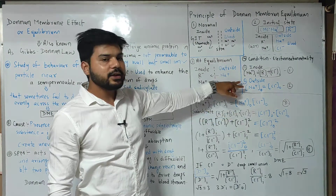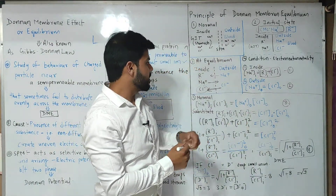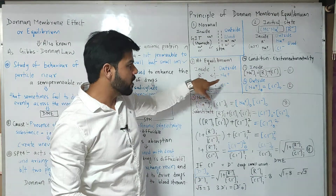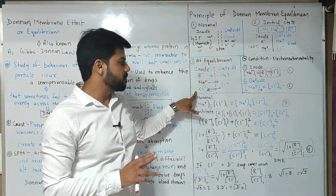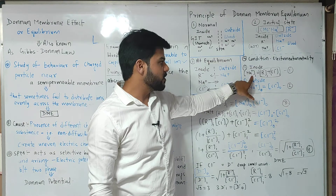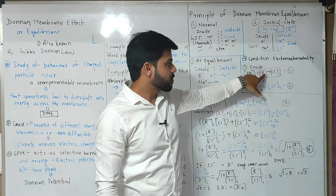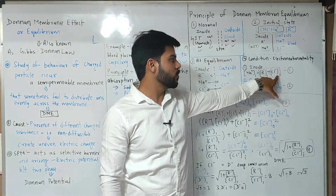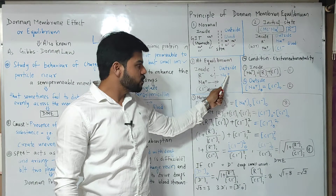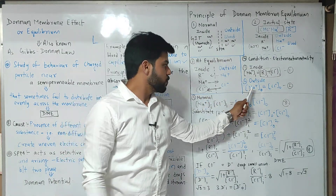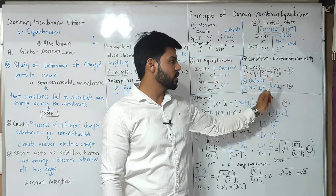We can represent this by writing the equations. For inside, the concentration of Na⁺ will be equal to the concentration of all negative ions. But inside there are two negative ions that maintain the equilibrium: R⁻ and Cl⁻. So equation one will be: [Na⁺]ᵢₙ = [R⁻]ᵢₙ + [Cl⁻]ᵢₙ. For outside, only sodium and chloride ions maintain the equilibrium, so equation two will be: [Na⁺]ₒᵤₜ = [Cl⁻]ₒᵤₜ.